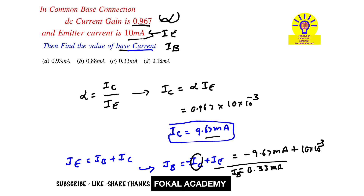By simplifying this, we get 0.33 milliampere, and this is the base current for the given common base transistor configuration. From the options, option C is the correct answer. Thanks for watching, please subscribe, like, and share.